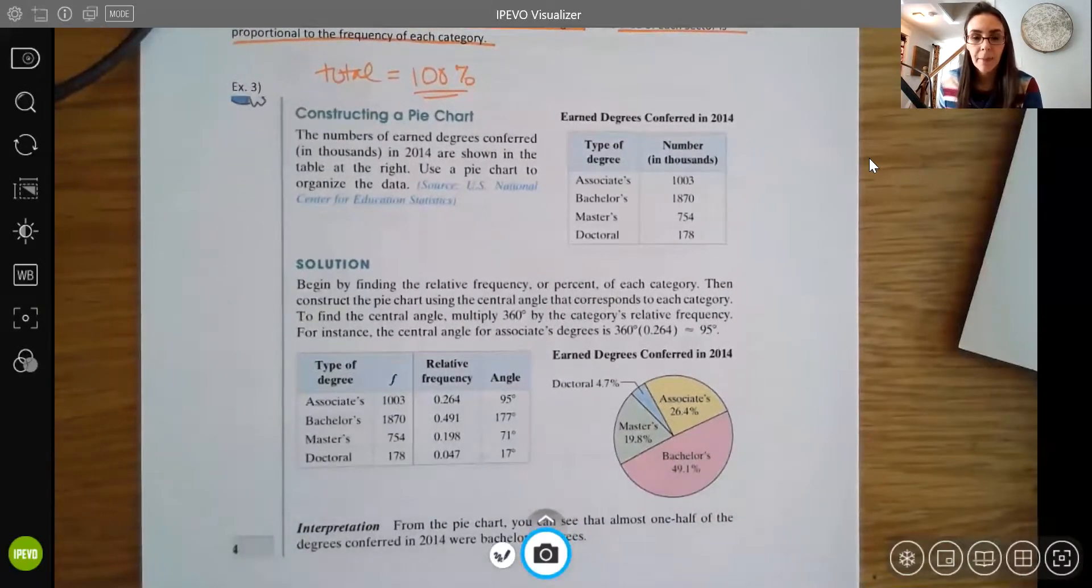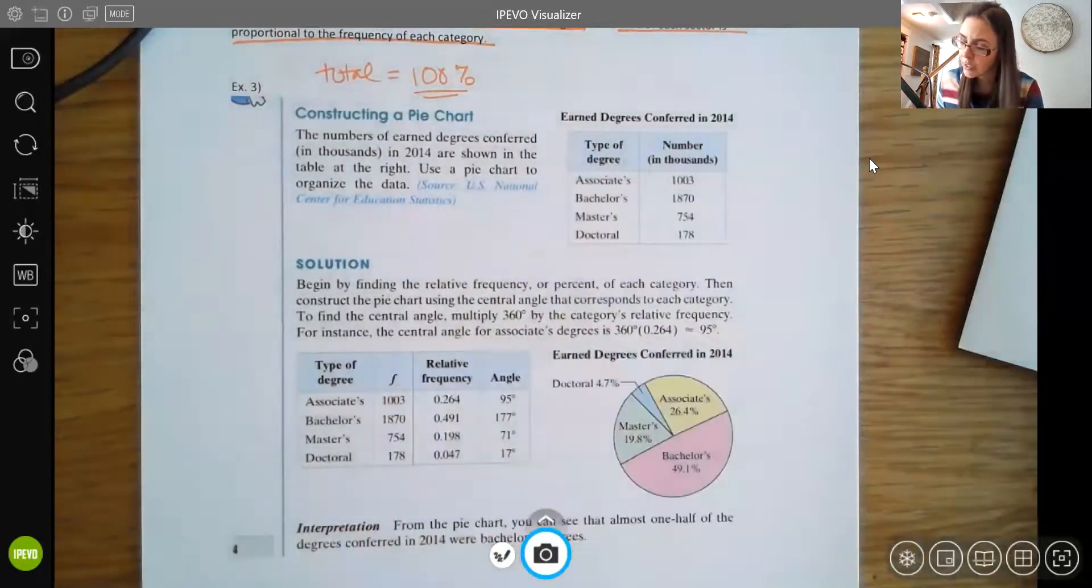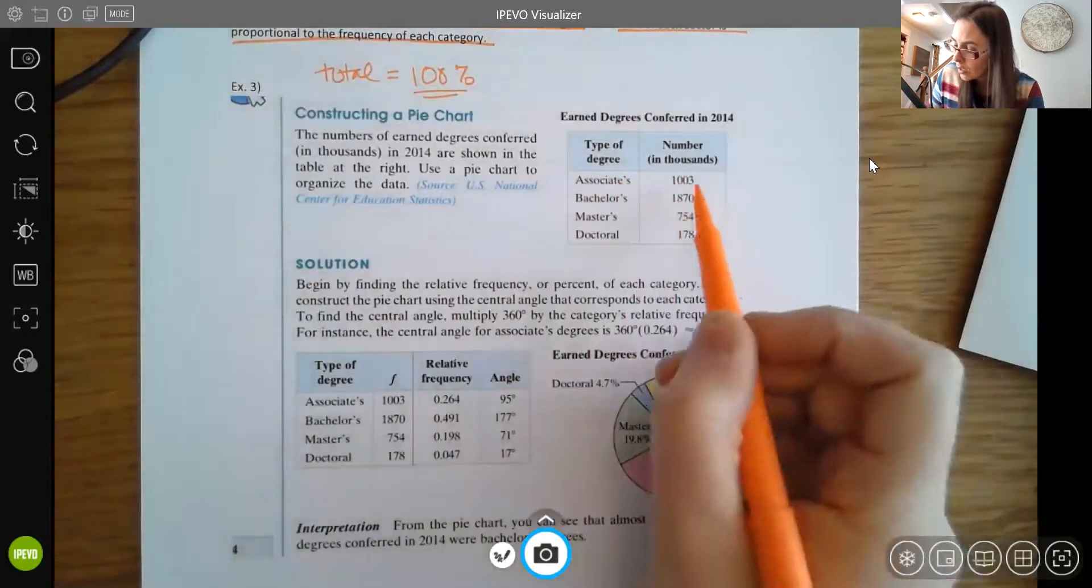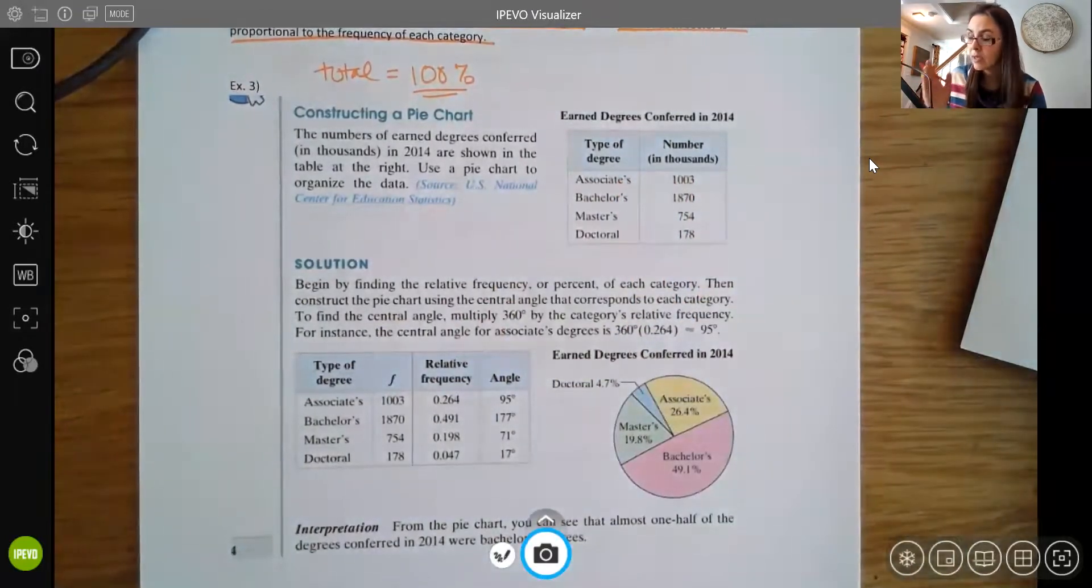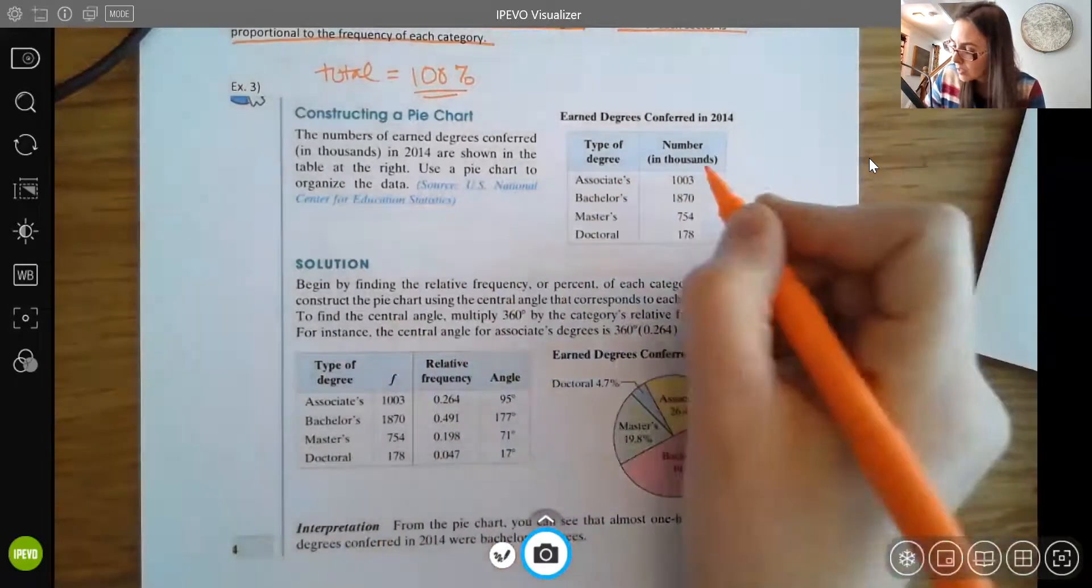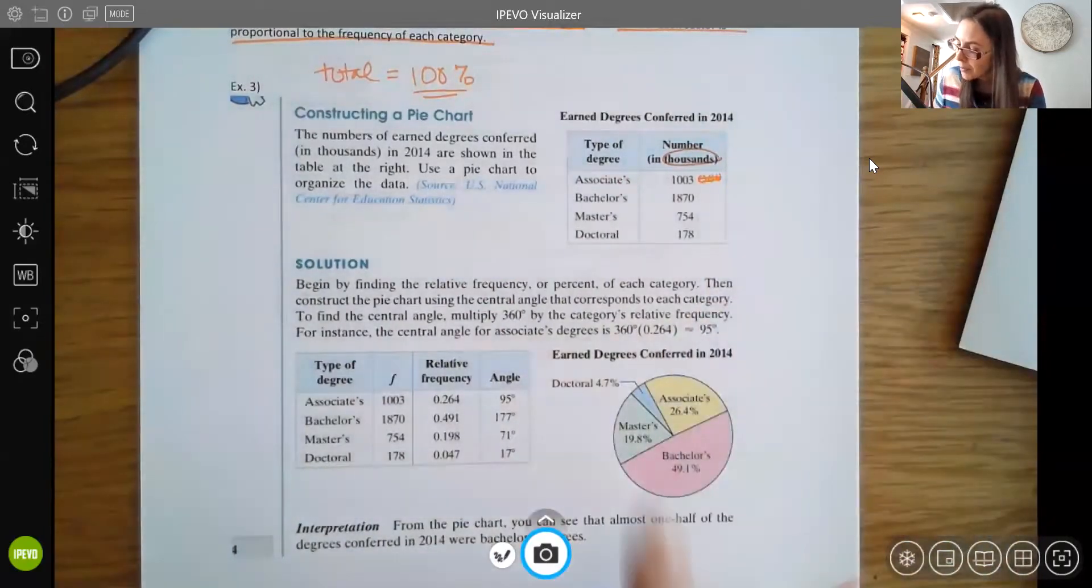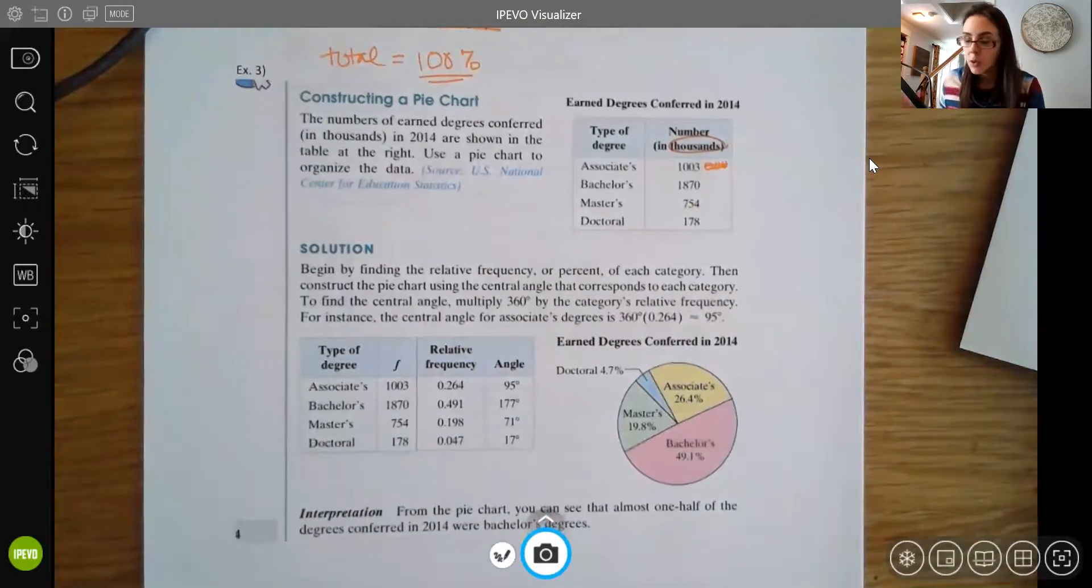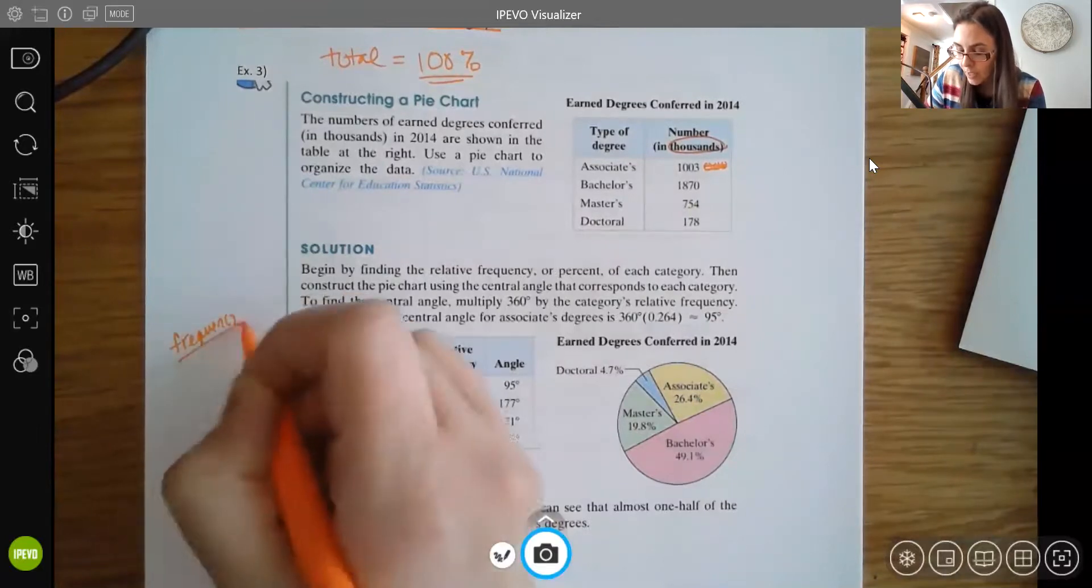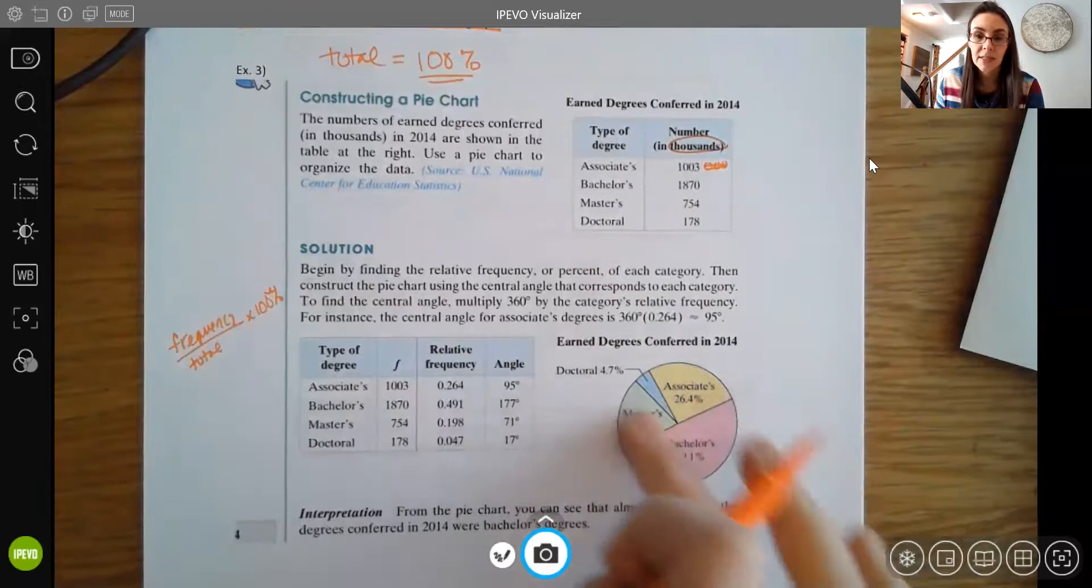So we can find our percents by just doing some simple math. So we already have the raw data that is broken down. So we have, these are the different degrees earned in 2014. They're in thousands. So here you have 1,003 associate degrees. Again, it's 1,003,000 associate degrees. So you're actually looking at a million there. So when it's in thousands, it really means to tack on an extra three zeros, right? Multiply that number by 1,000. And then you have your bachelor's, master's, and doctoral degrees as well. So you can always find your percent by taking the frequency and dividing it by the total and then multiplying that by 100%. And that will give you the percent for each of those segments.